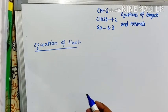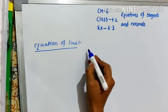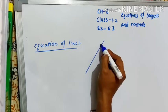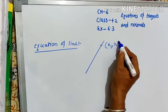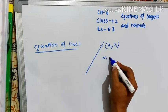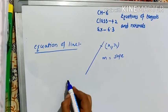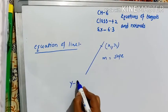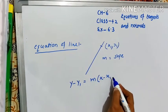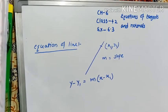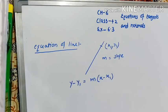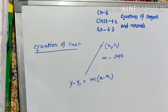Next definition: equation of line. We know that if a line passes through the point x1 y1 and whose slope is m, then equation of line will be y minus y1 is equal to m times x minus x1. Here x and y is any point on that line, meaning x y is a general point on the line.